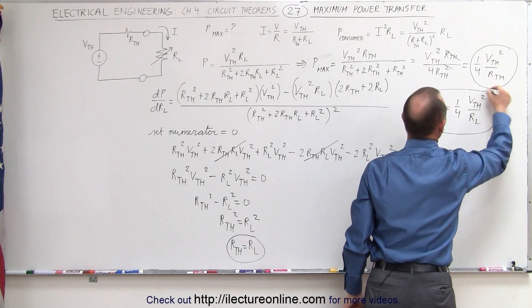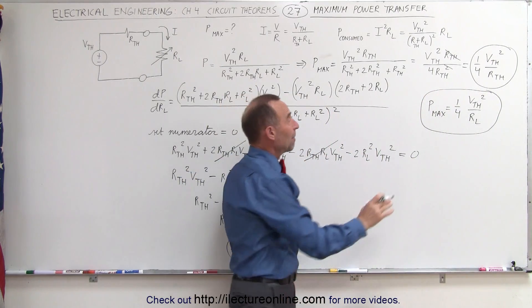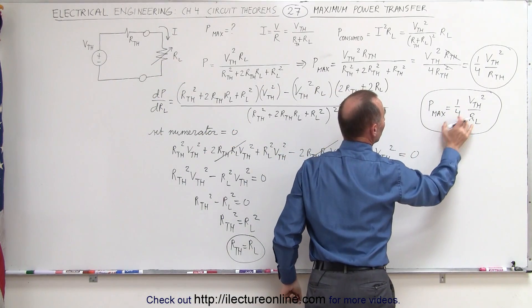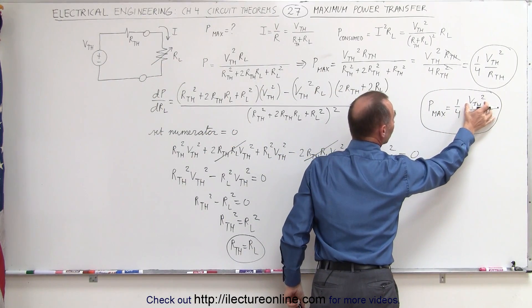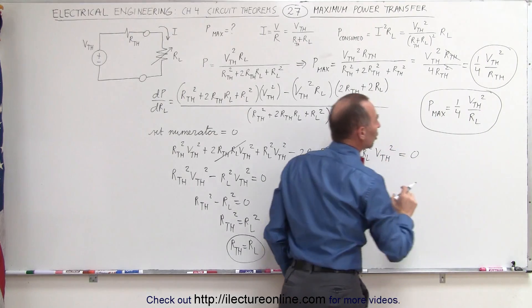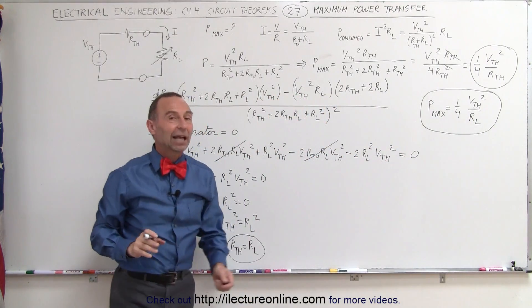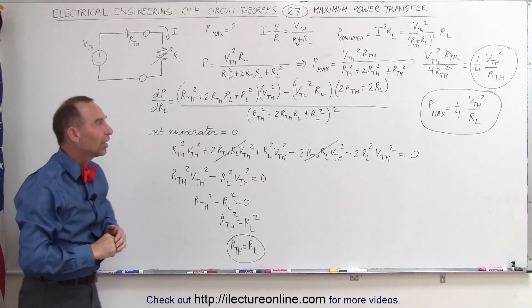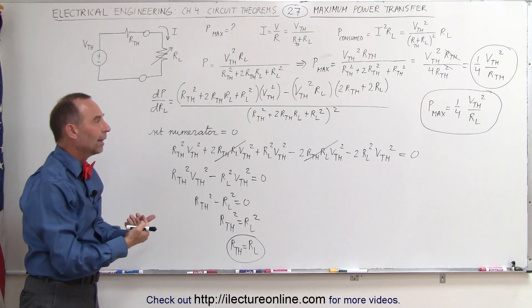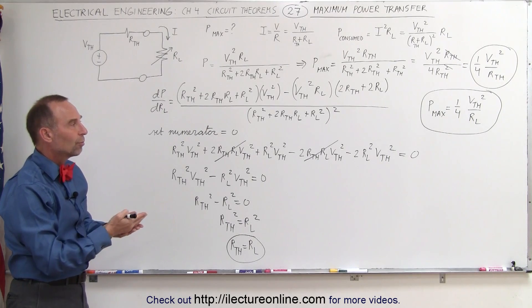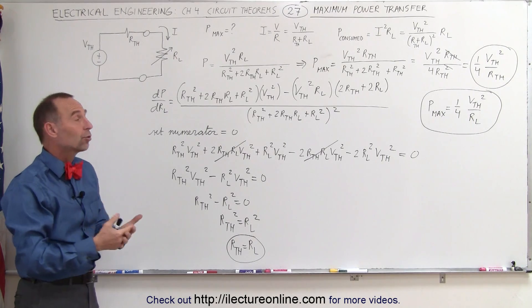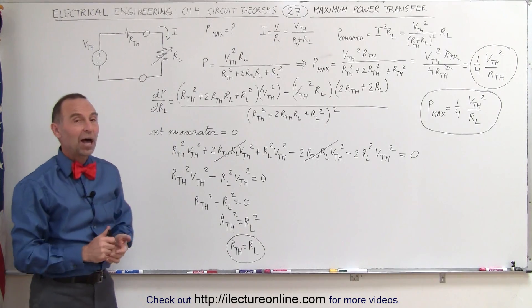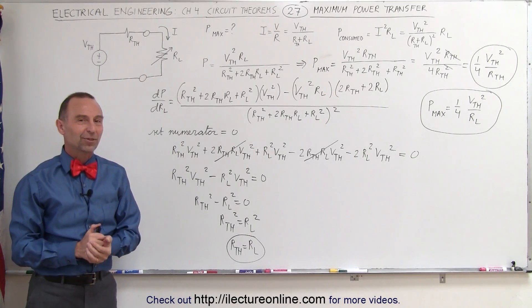So expressed in terms of the load resistor, the maximum power transferred to the load resistor is equal to one quarter V-thevenin equivalent voltage squared divided by the load resistance. That's how we find the maximum power transferred. We'll do some example problems to show how we can actually apply this and find the maximum power transfer condition.